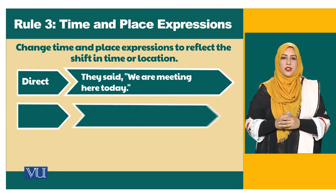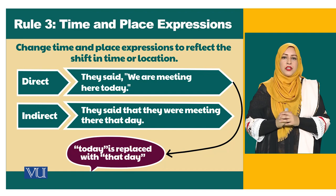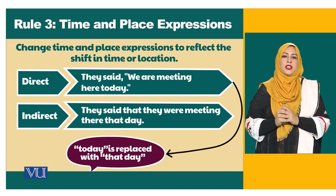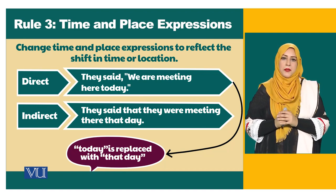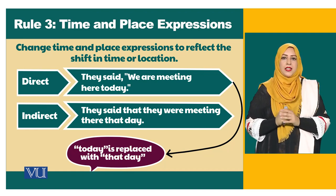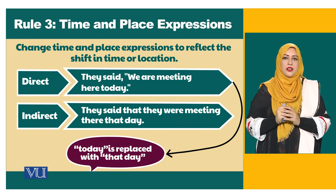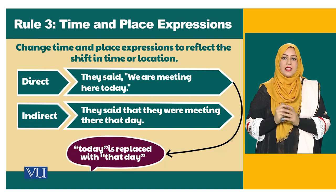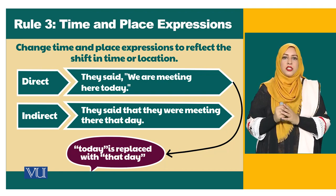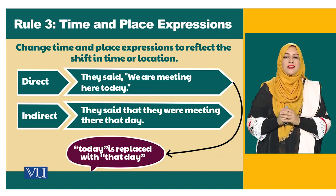The third rule of conversion is the rule of time and place expression. When you are converting direct speech into indirect speech, you need to change the time and place in order to show the shift between location and time. For example, the direct speech says 'They said, we are meeting here today.' The indirect speech says 'They said they were meeting there that day.' As you can see, 'we' was replaced with 'they,' 'are' changed to 'were,' 'here' changed to 'there,' and 'today' was replaced with 'that day.'